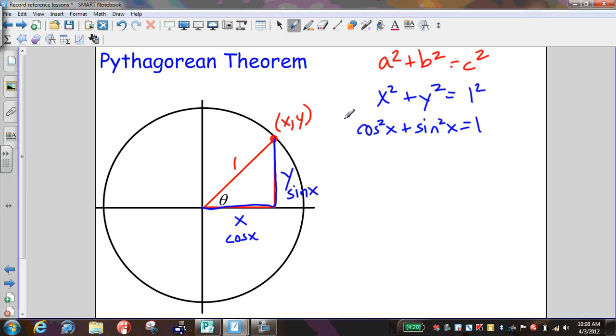This is the basic fundamental Pythagorean identity that we want to make sure we know and memorize and can identify very quickly. Now what I'm going to show you is how do we translate this into the two other ones.